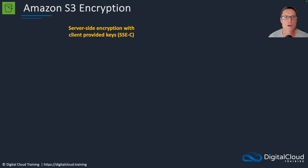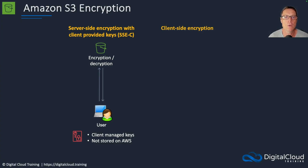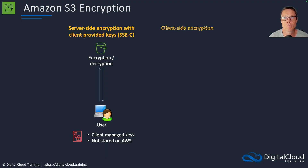Next we've got server-side encryption with client-provided keys. The difference here is that the client creates their own keys within their own public key infrastructure, their own certificate services. These keys are not actually stored on AWS. The encryption is still happening at the S3 bucket, but we're providing our own keys from our own certificate infrastructure.